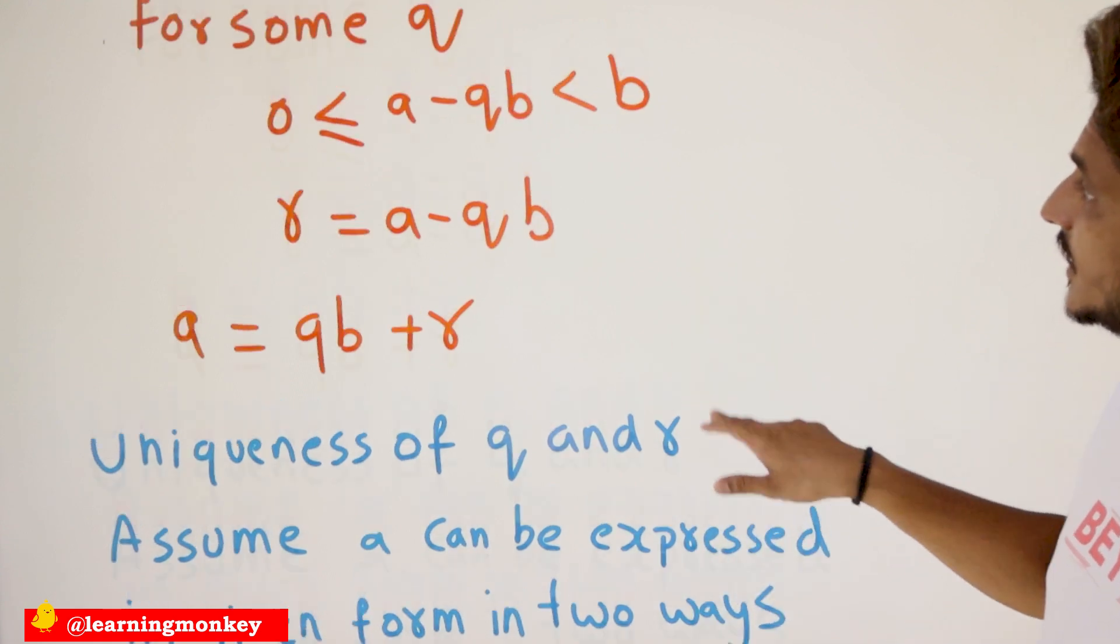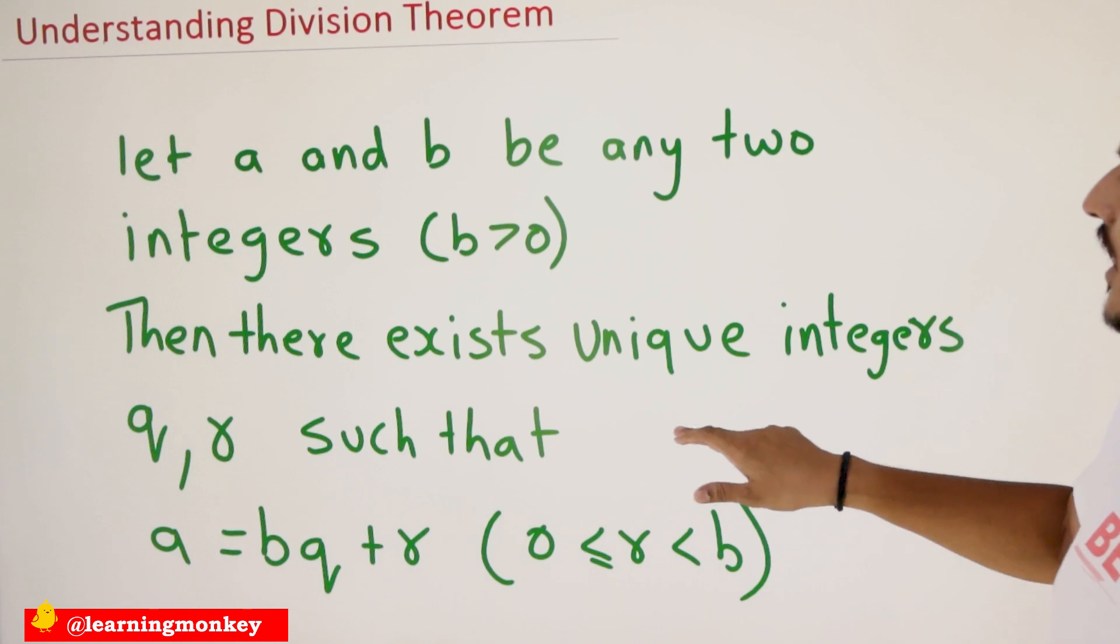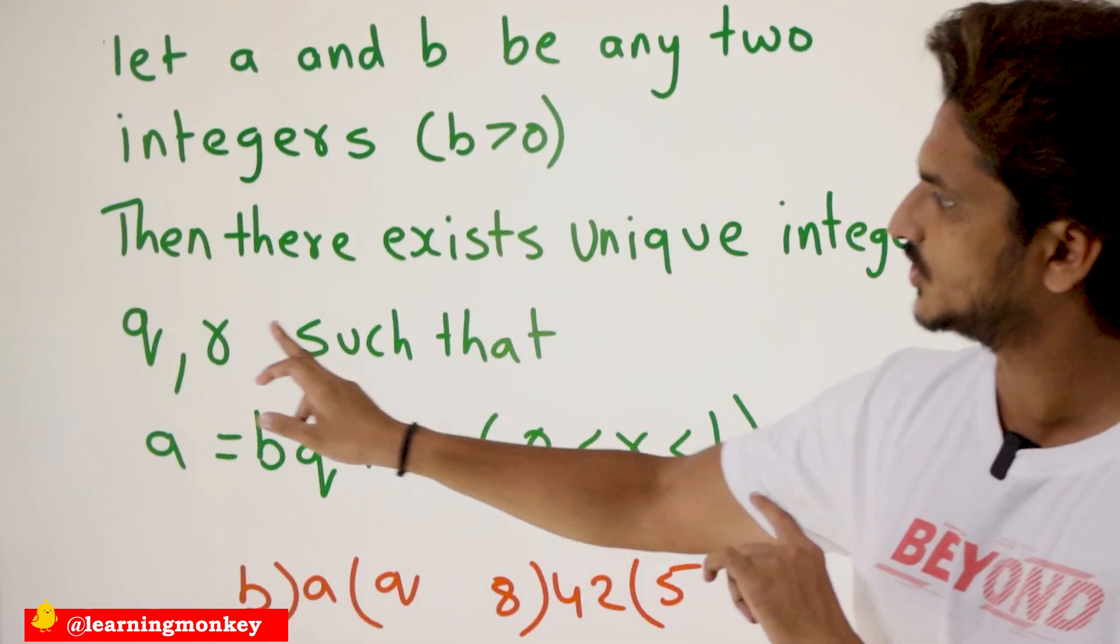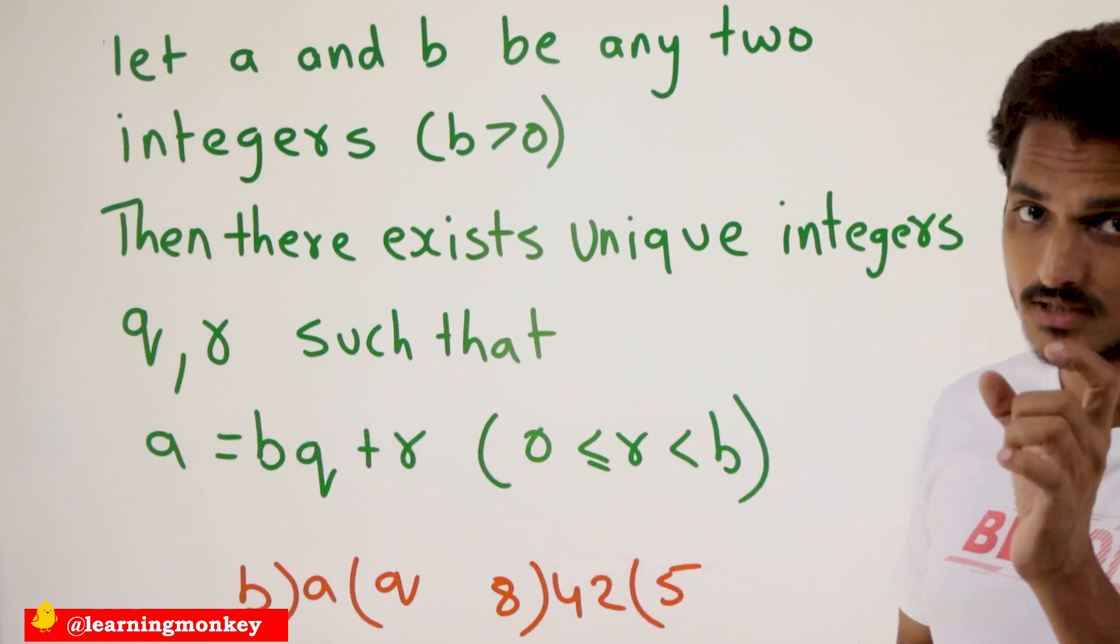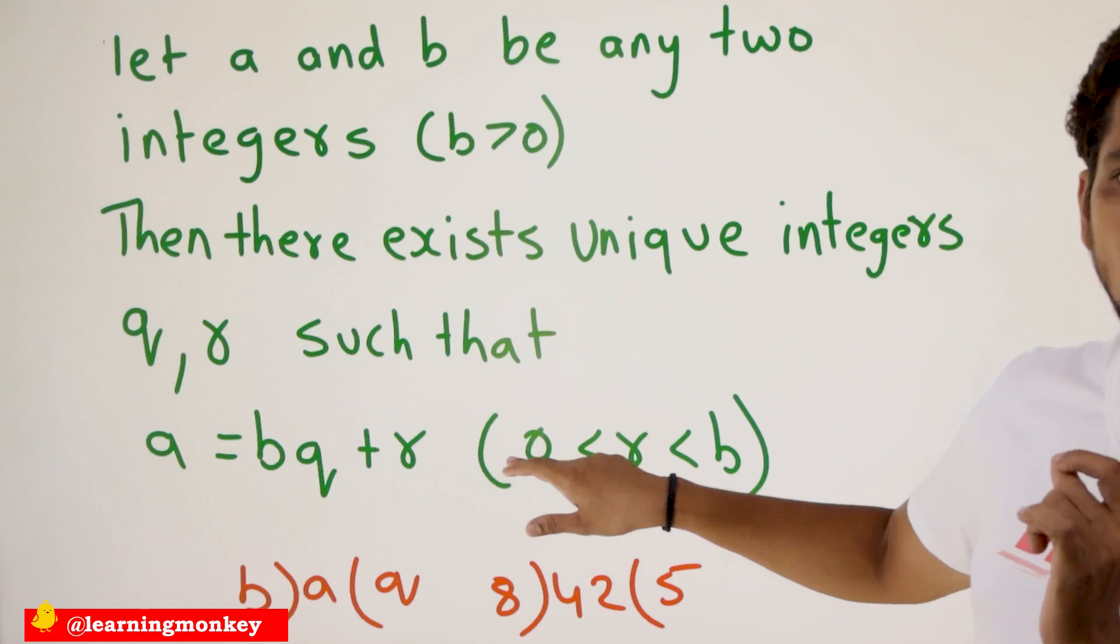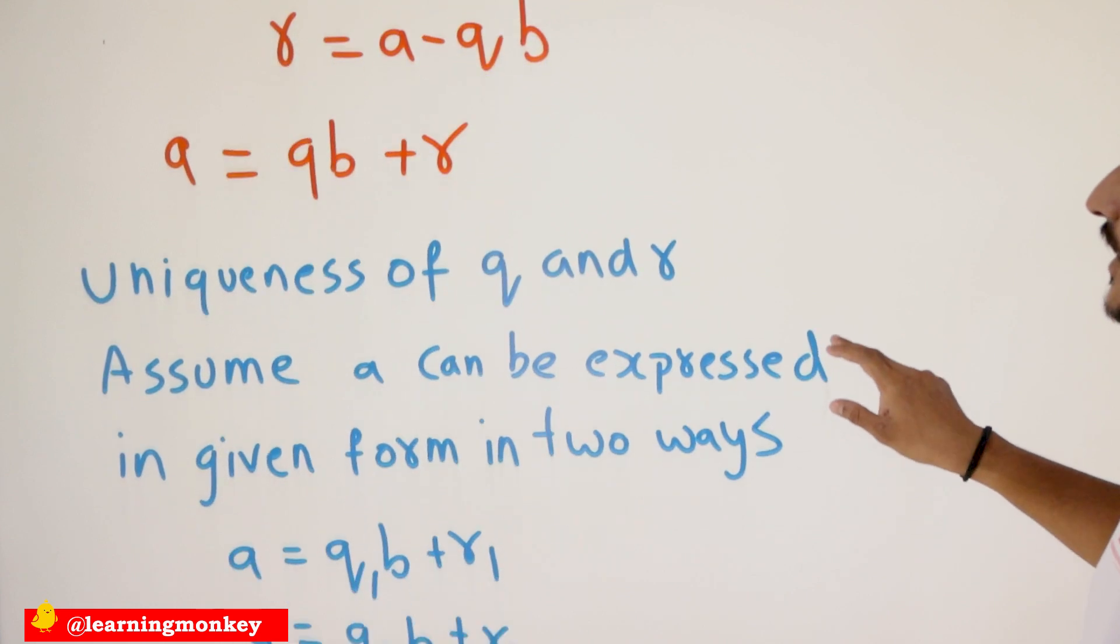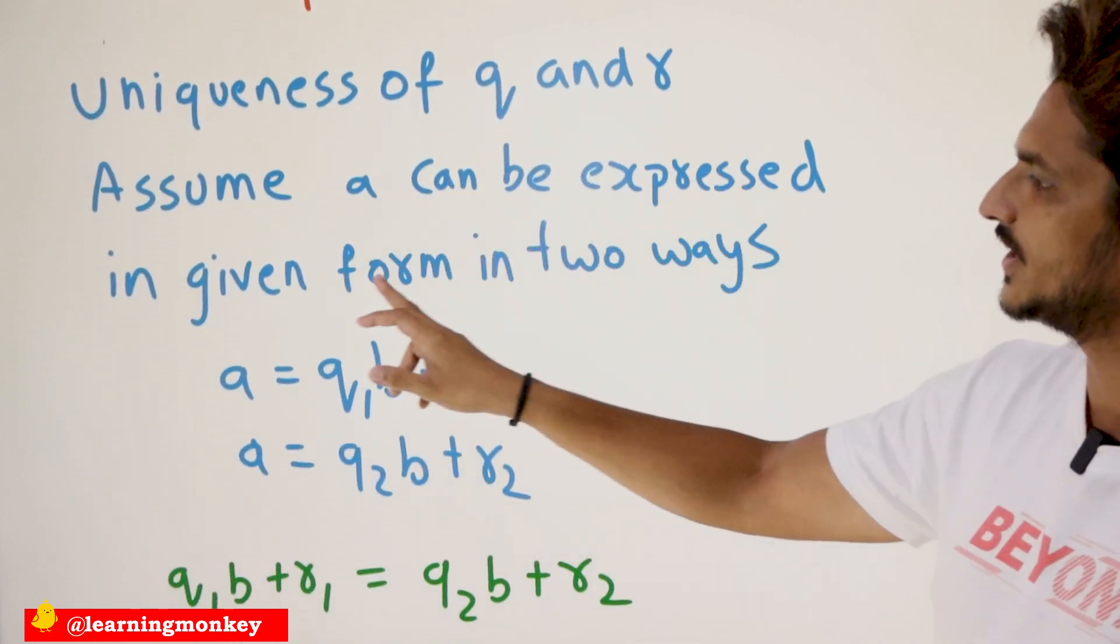So we got the equation A equals QB plus R. And it was said from the theorem that there exist unique integers Q comma R. Unique means only one set of this pair. So why is it only unique numbers? Let us try to understand uniqueness of Q and R.